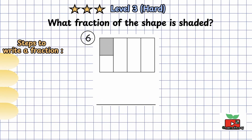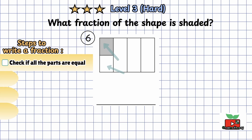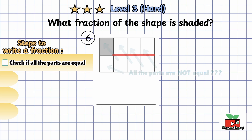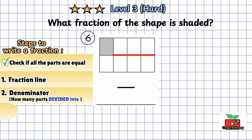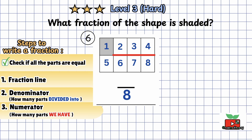Question 6 — this one is tricky, but you can do it. Pause the video to think for a moment. First, check if all the parts are equal. Hmm — two parts are small and three are big; they are not equal. So let's draw an extra line to make all the parts equal. Now draw a fraction line. Write the denominator: the shape is divided into eight parts, so we write 8 at the bottom. Write the numerator: one part is shaded, so we write 1 on top. The shaded part is 1 eighth of the shape.